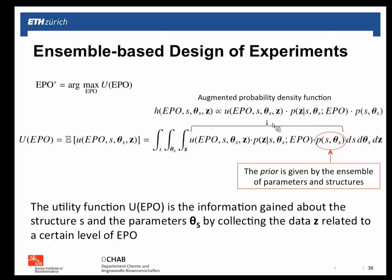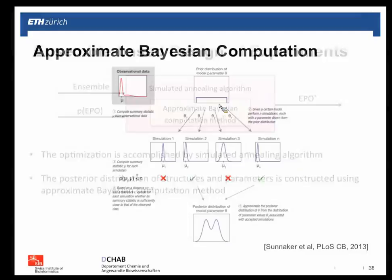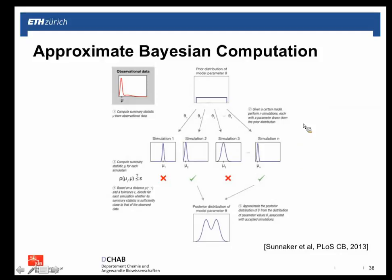The formulation integrates the utility over the posterior distribution for a given EPO level, with the prior distribution from our ensemble modeling. We use an augmented probability density function with a surrogate density H, performing simulated annealing optimization. The posterior distribution is calculated using approximate Bayesian computation (ABC), a Monte Carlo technique — referenced in a PLOS Computational Biology paper.